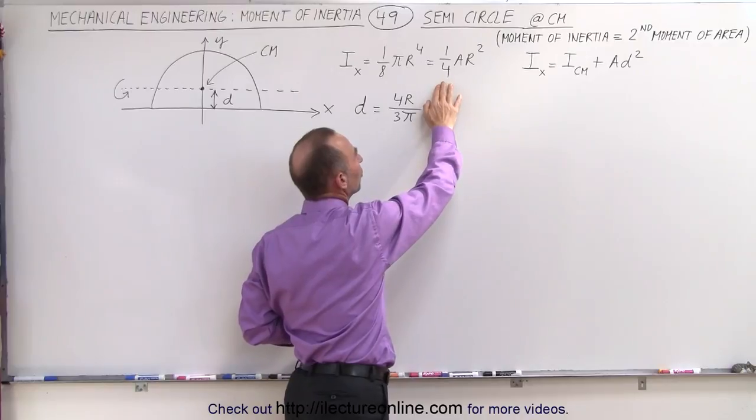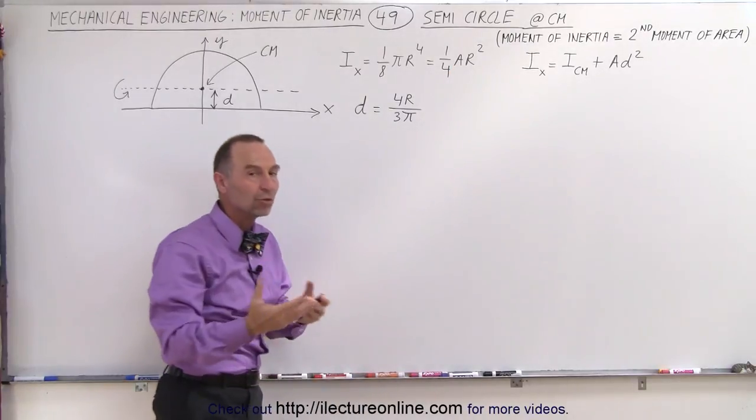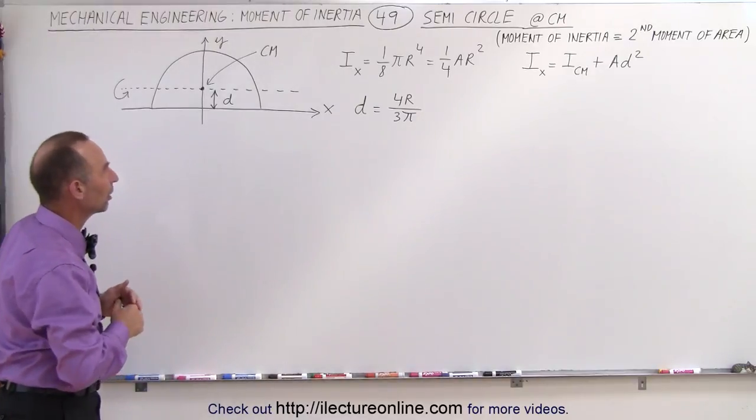If you talk about the moment of inertia with mass, the a would then become the mass of the object, so we can either use mass or area depending upon what's available to us.